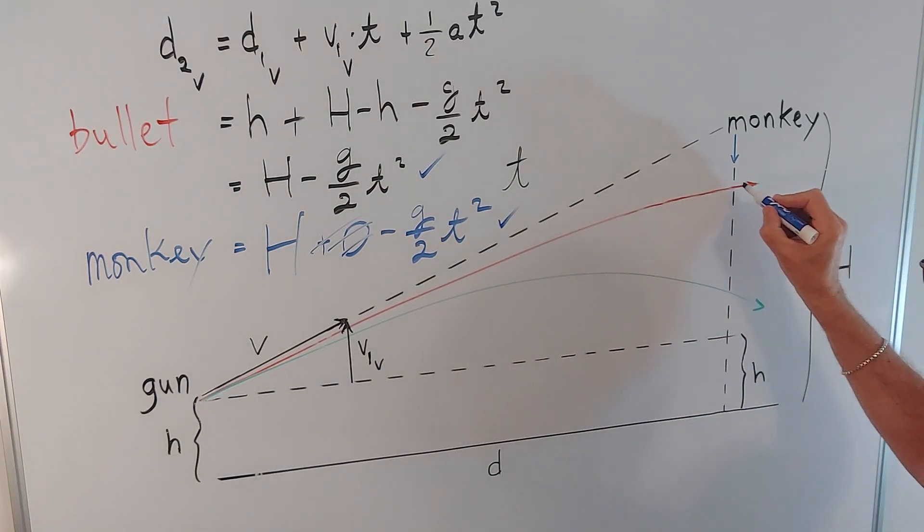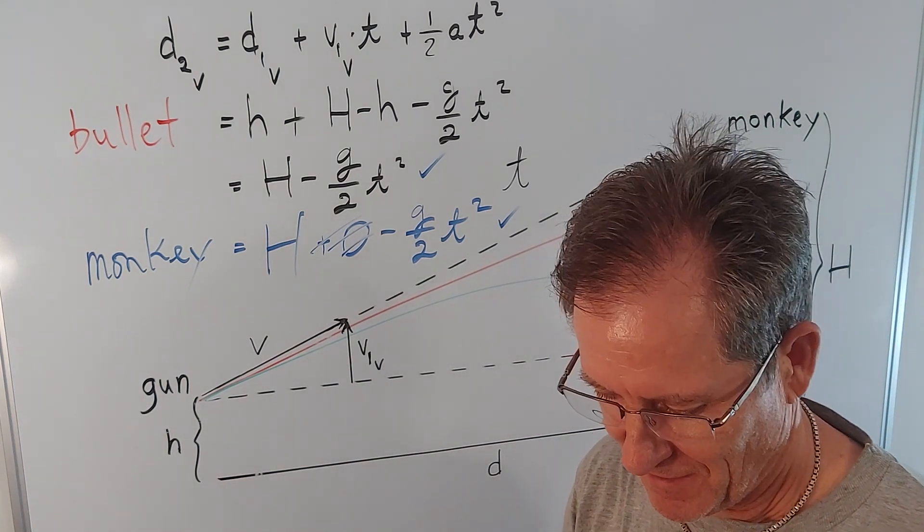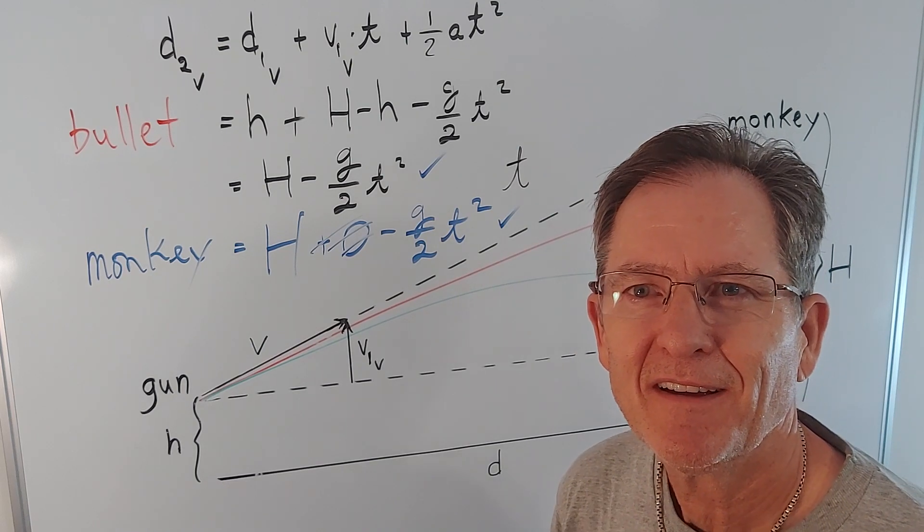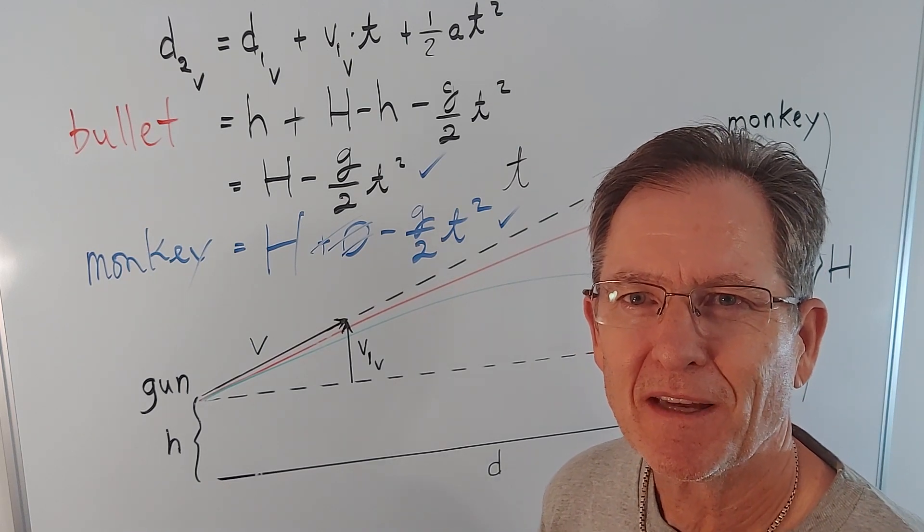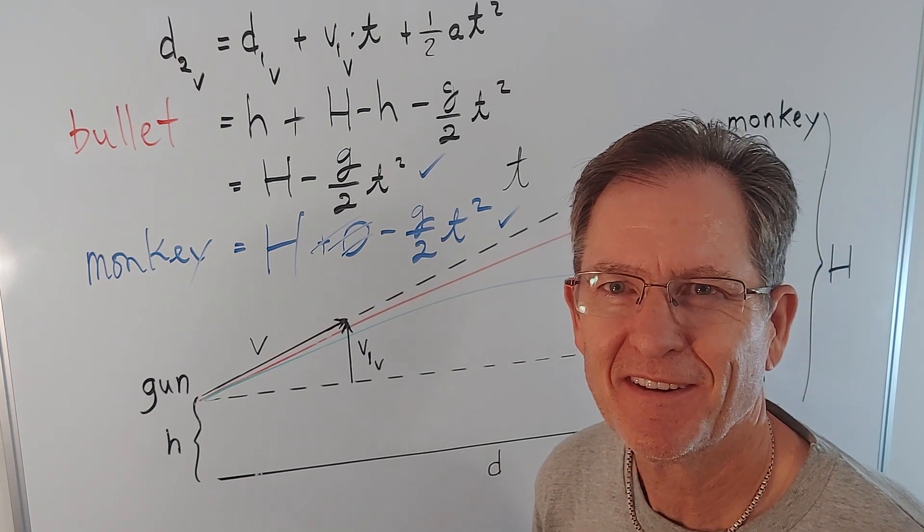So the monkey will be right here, or right here, depending on the original speed of the bullet. And it's going to go right through the gut of the monkey. Remember I asked you what your gut feeling was? Well, there it is.